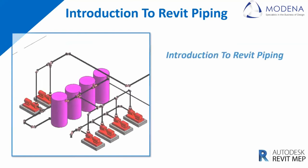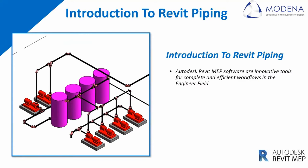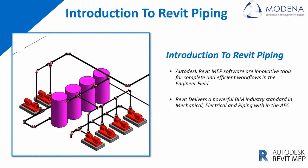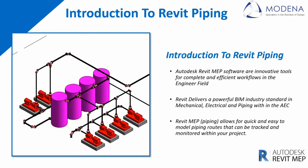Just a brief introduction to Revit piping. Autodesk Revit MEP software is an innovative tool for completing efficient piping workflows within the engineering field. Autodesk has leveraged Revit as a BIM product and there are certain requirements and benefits when using these elements. Revit delivers a powerful BIM industry standard in mechanical, electrical, and piping within the AEC industry. And if you are using Revit MEP piping, it allows for quick and easy modelling of piping routes that can be tracked and monitored within your Revit project.